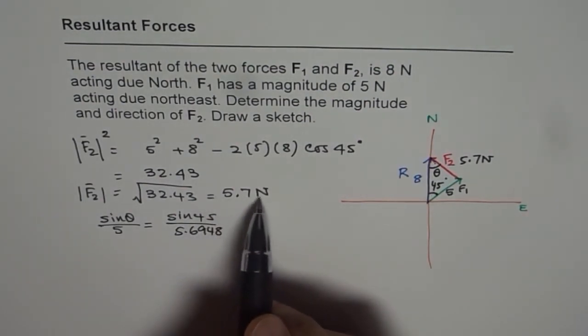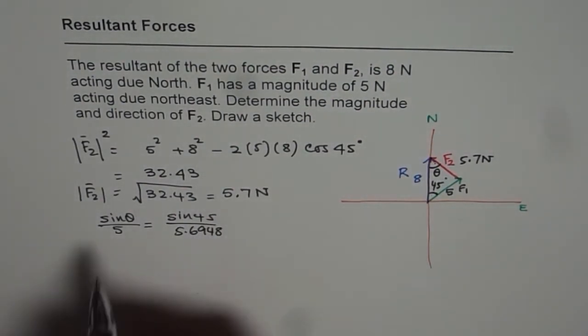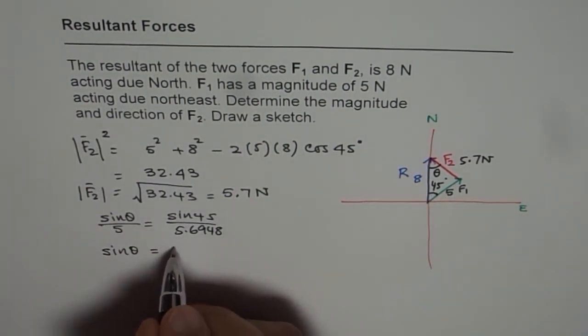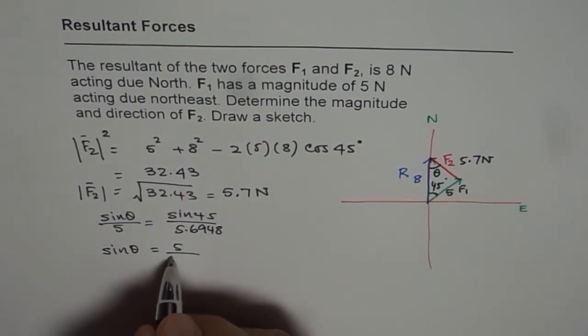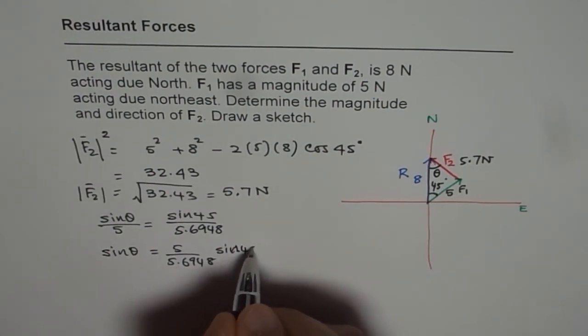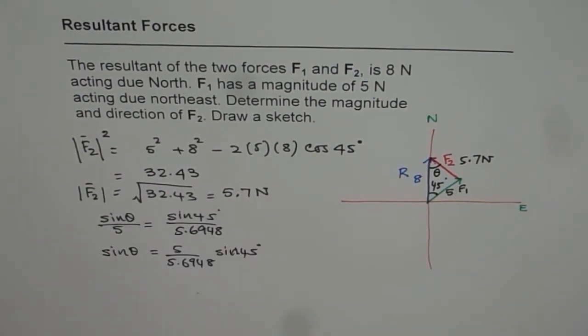Instead of 5.7, we rounded this figure out. Now from here we can find what theta is. So we can find that as sine theta equals to 5 over 5.6948 times sine of 45 degrees. Let's use calculator to find this answer. So it is 5 divided by 5.6948 times sine of 45 degrees which is 0.6208.